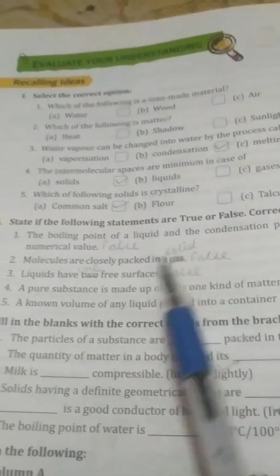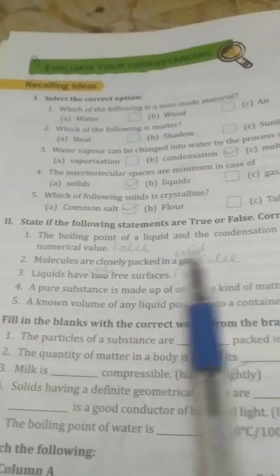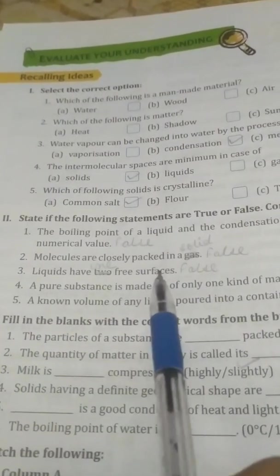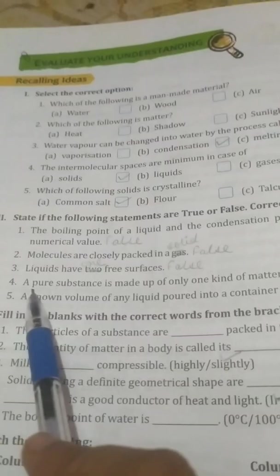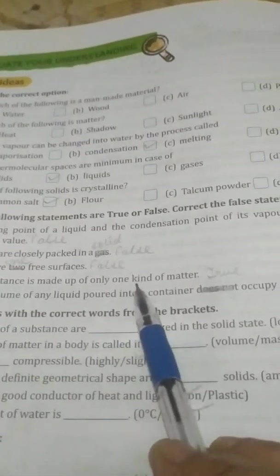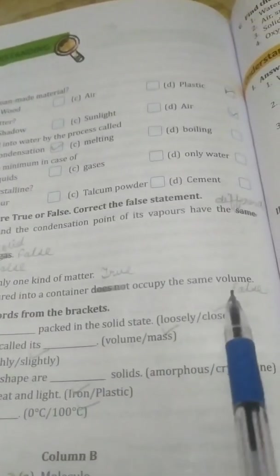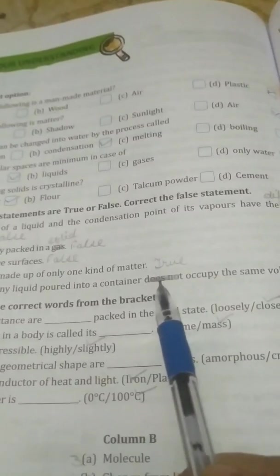Third, liquids have two free spaces. That is false. Only one free space. Fourth, a pure substance is made up of only one kind of metal. That is true. Fifth, unknown volume of any liquid poured into a container does not occupy the same volume. So it is false and you have to rub that does not.